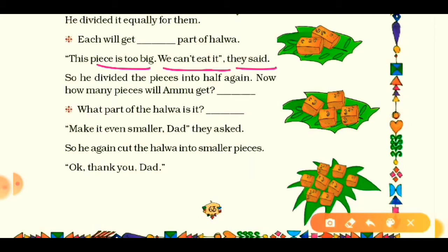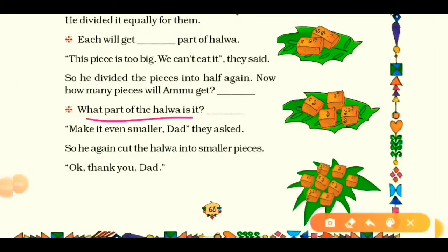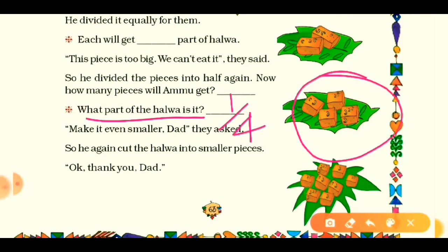The children said the pieces are too big to eat. So Ramesh divided each piece into half again, making a total of four equal parts. Ammu will get two pieces out of four pieces. That is one-fourth part of the halwa, because the whole halwa is divided into four parts.